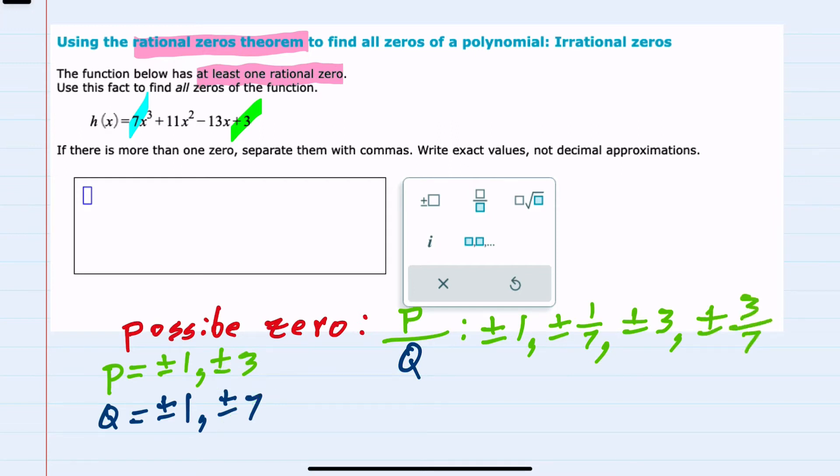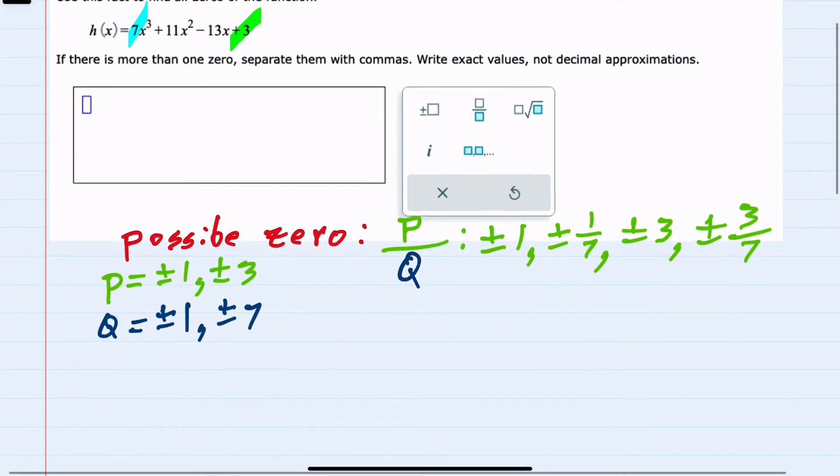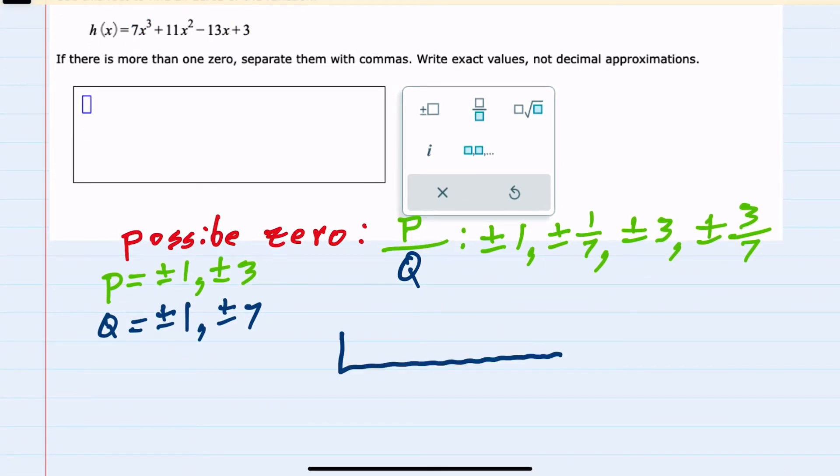So we have a total here of eight possible zeros and we can test each one of these with synthetic division where inside we would have each of these leading coefficients: seven, eleven, minus thirteen, and three.